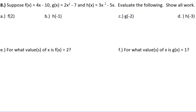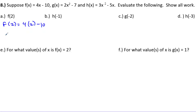Problem 8 gives three functions — f of x, g of x, and h of x — and asks you to evaluate them showing all work. For letter A, f of 2: go to the f function, plug in 2 wherever you see x. So f of 2 equals 4 times 2 minus 10. That's 8 minus 10, which is negative 2.